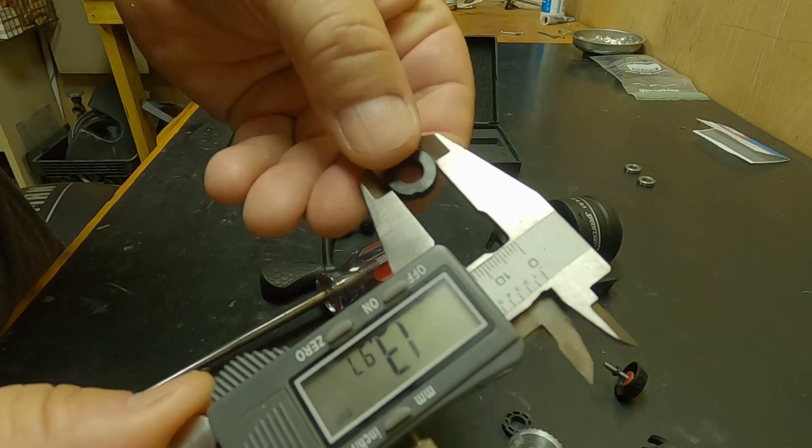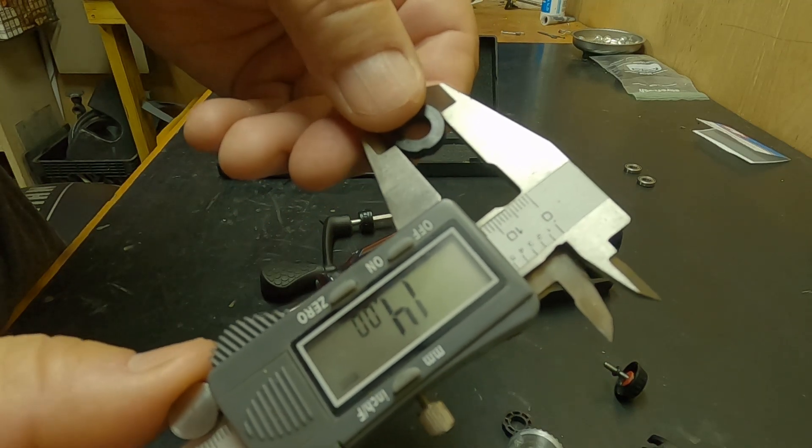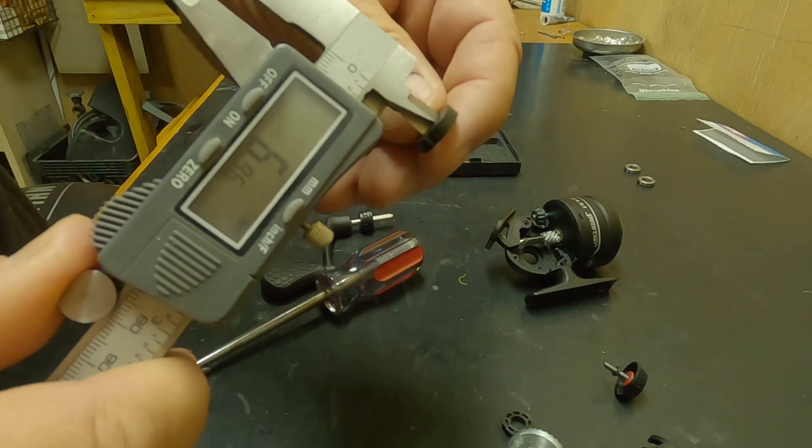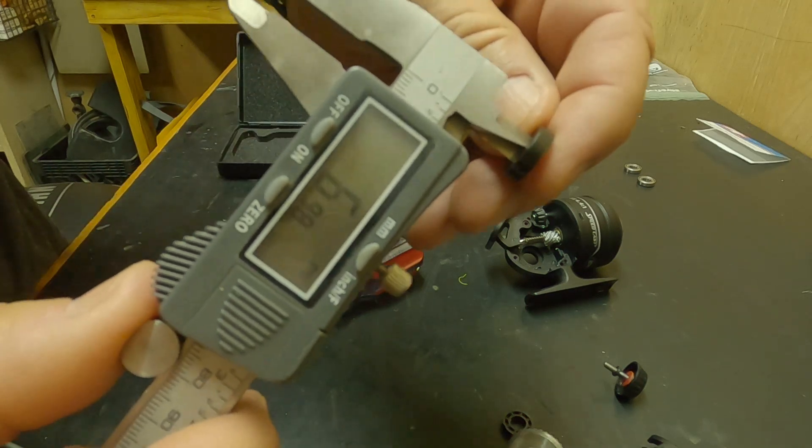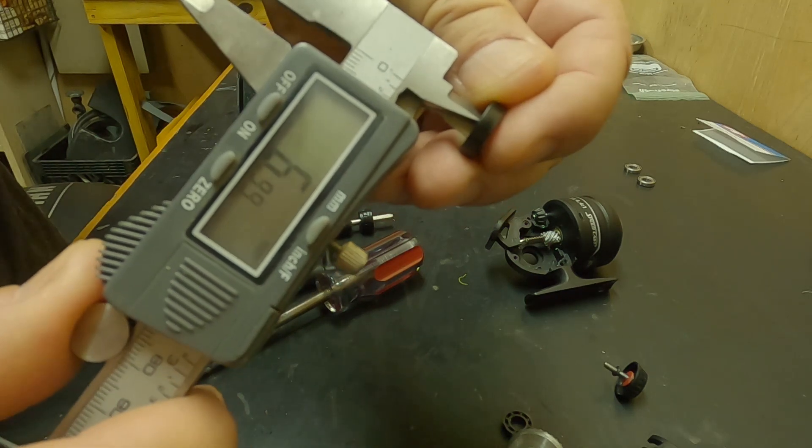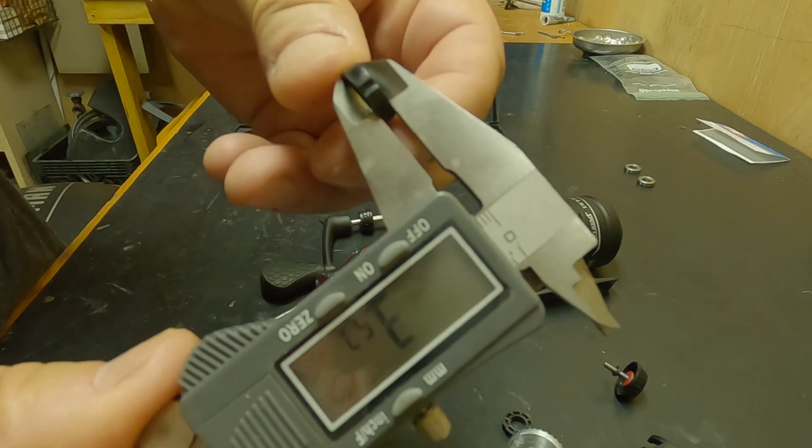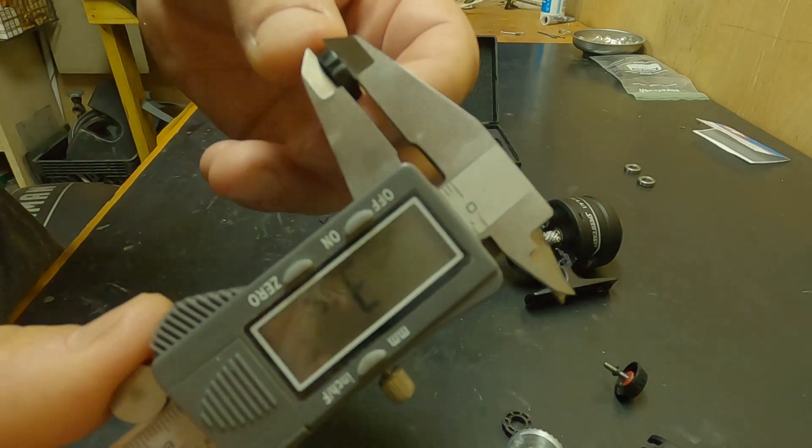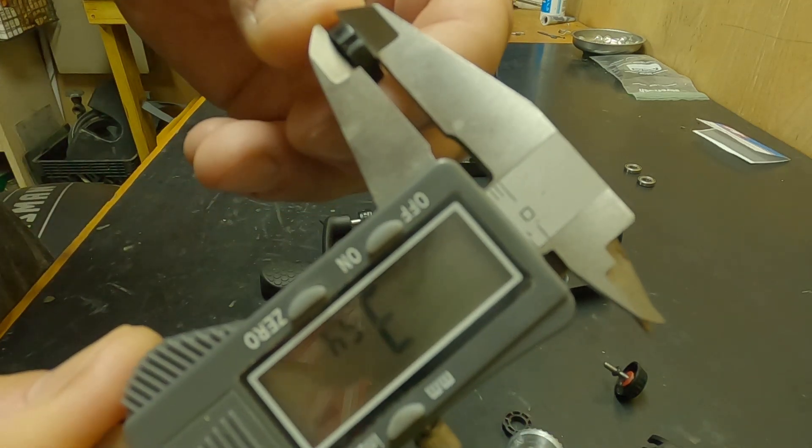This is the important part, got to get a good reading on the OD, which is 14. The ID, the inner diameter, is 7. And the last one you need to know is how thick it is. This one here is 3.5 millimeters thick.